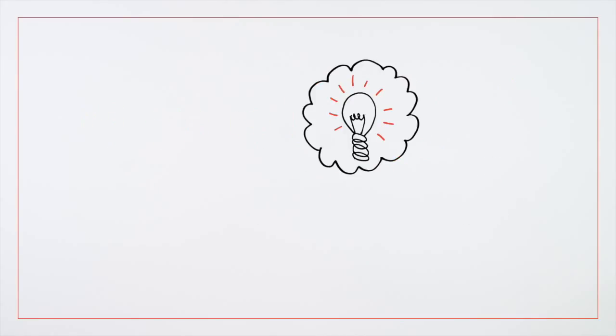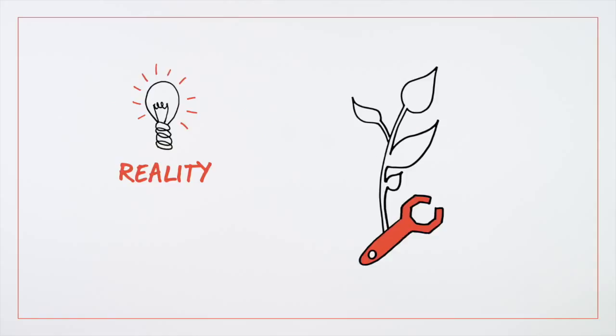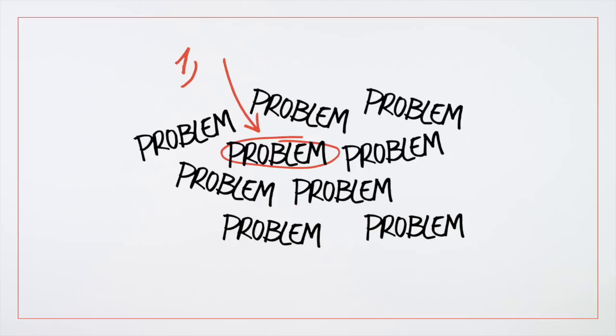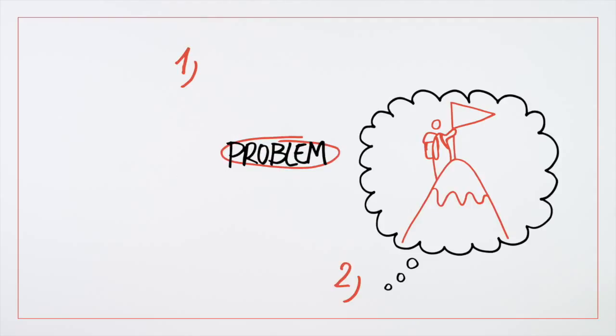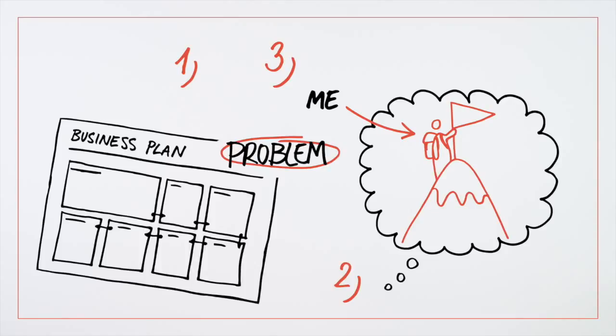When you're trying to implement an idea or grow your work, you should be clear about three things: the problem you want to address, a vision of how you will address it, and why you are the best person to do it. A business plan is a structured way to capture this information.